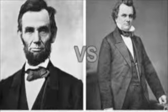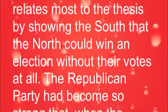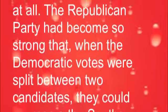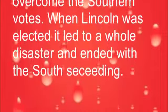The election of 1860 was mostly between Abraham Lincoln and Stephen Douglas, with the other candidates being John Bell and John Breckinridge. It was a very close race between Lincoln and Douglas, and had there only been one Southern Democrat running for the presidency, Lincoln would have lost the election. The Southern ballot excluded Lincoln's name. The election of 1860 relates to the thesis by showing the South that the North could win an election without their votes at all. The Republican Party had become so strong that when Democratic votes were split between two candidates, they could overcome the Southern votes. When Lincoln was elected, it led to a whole disaster and the South seceding.